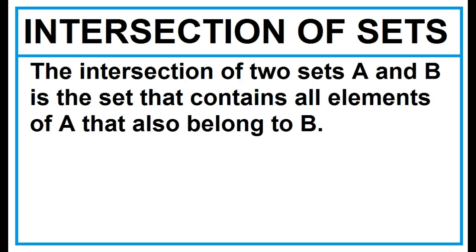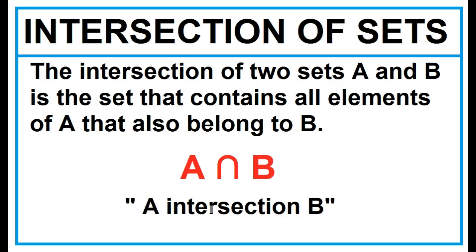Intersection of Sets. The intersection of two sets A and B is the set that contains all elements of A that also belong to B. This symbol is read as A intersection B.